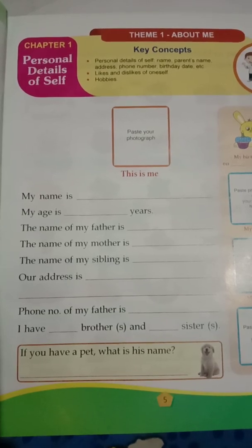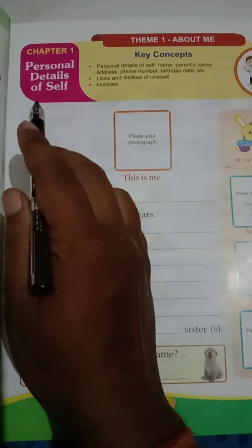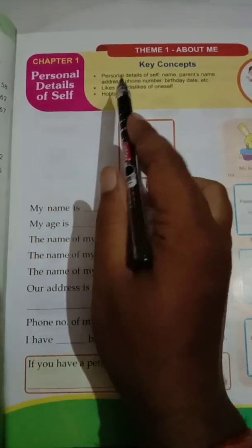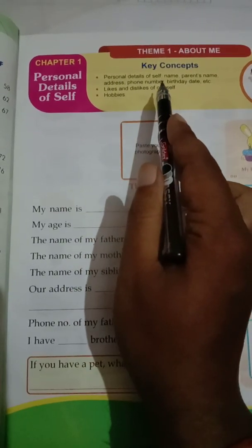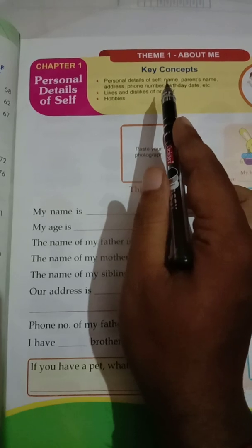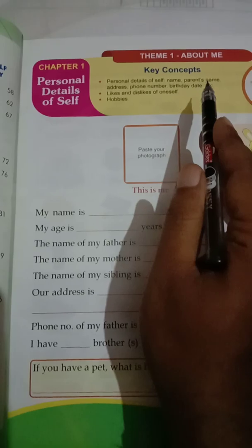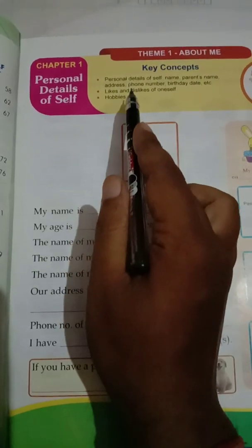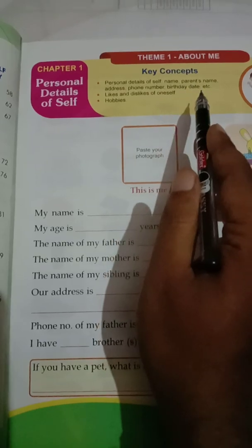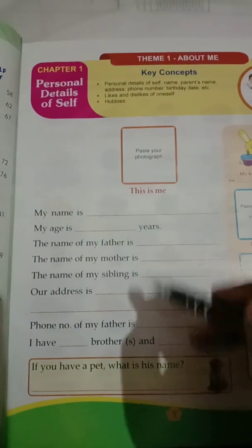So let's move to our first chapter which is Personal Details of Self. Personal Details of Self means you have to write your personal details — like your name, your parent's name, your address, your phone number, your birthday date, etc. These are your personal details. You have to fill these in.